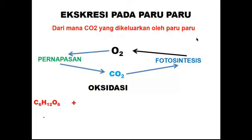Untuk apa oksigen? Pada saat kita menghirup oksigen, oksigen sampai pada paru-paru, O2 itu nanti diikat oleh hemoglobin (Hb), zat warna merah darah, dan akan beredar ke seluruh tubuh bersama zat-zat yang lain. Sampai di sel-sel tubuh, O2 akan diserap oleh sel-sel tubuh. Di situlah di dalam sel ketemu dengan yang namanya C6H12O6 atau gula.